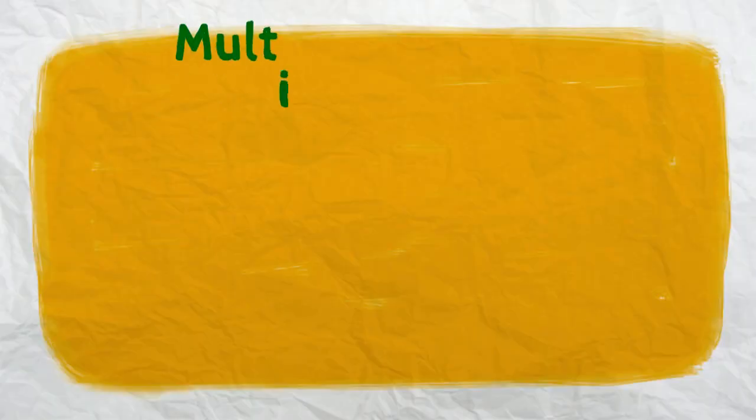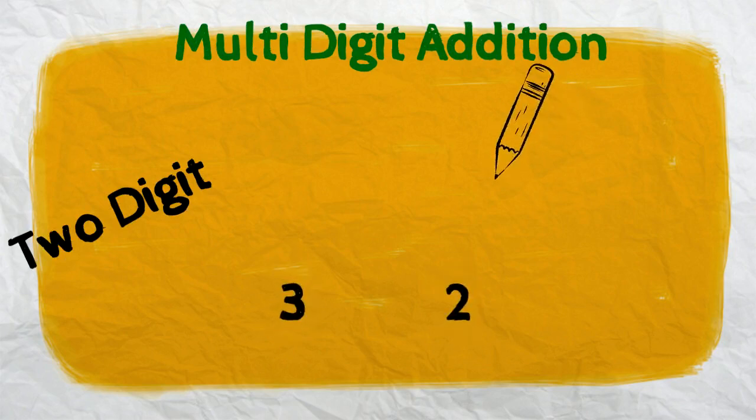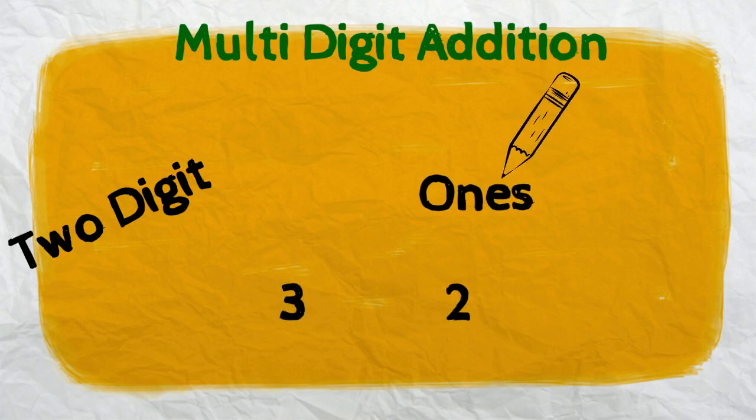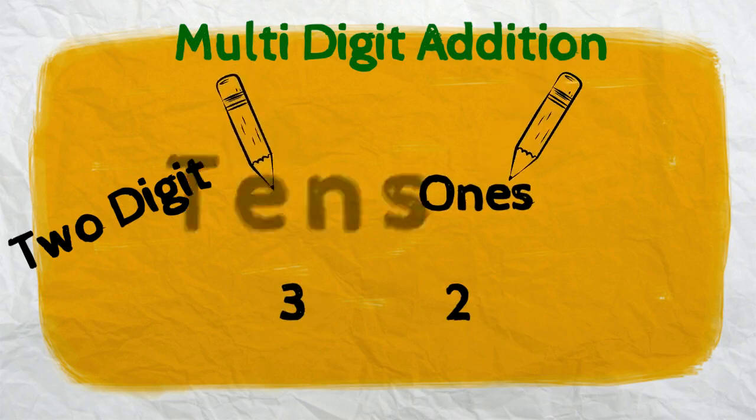In this video we're going to learn multi-digit addition. A multi-digit number is just a number with more than one digit. Two-digit numbers use two number places like 32 has a two in one space and a three in ten space.